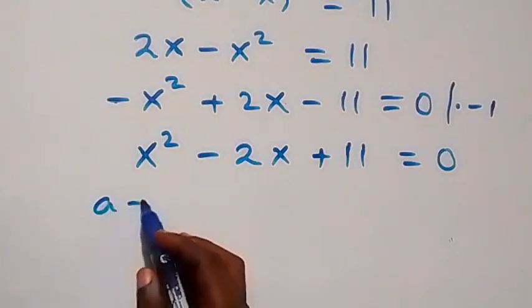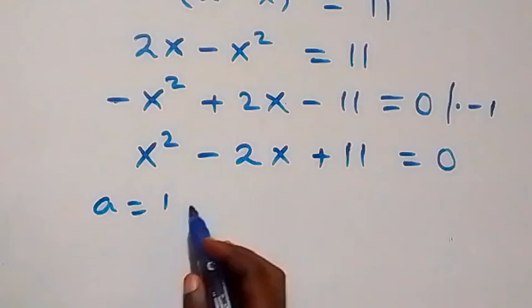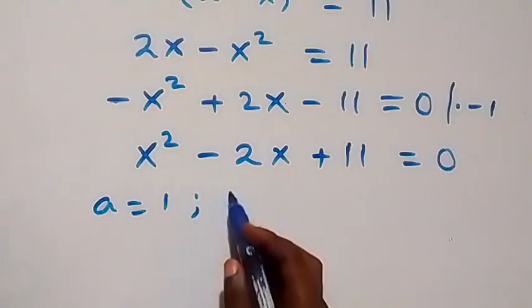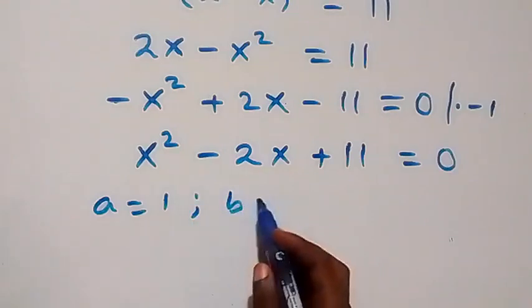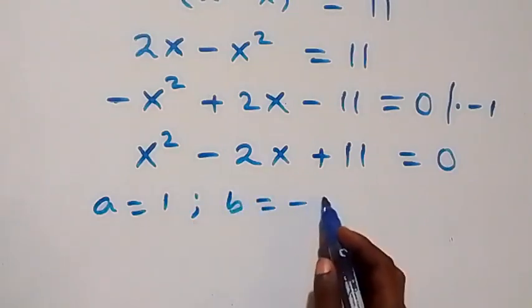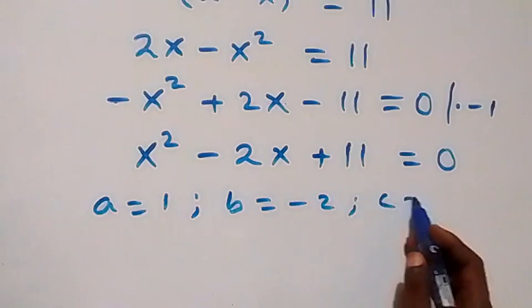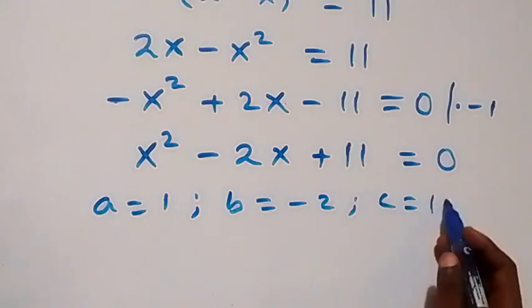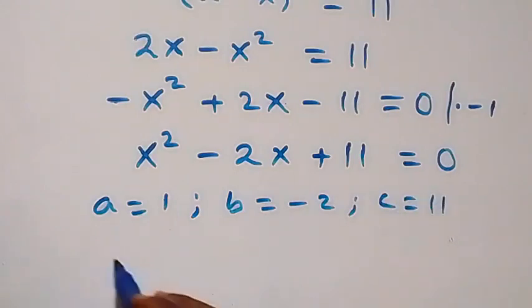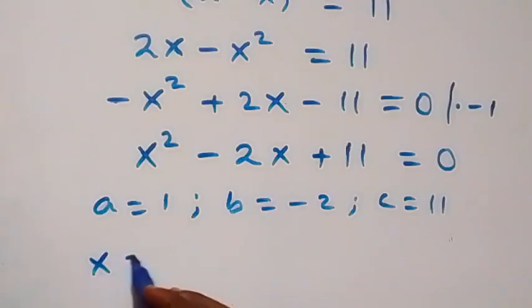This gives us a quadratic equation where a is 1, b equals minus 2, and c equals 11.